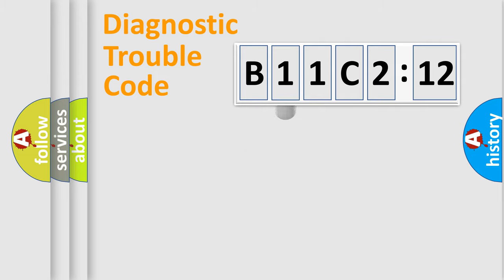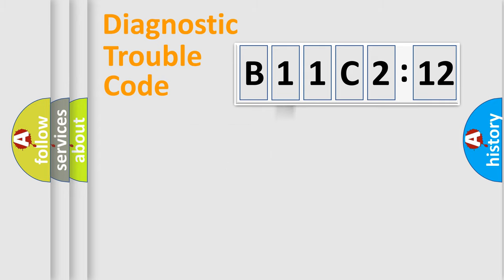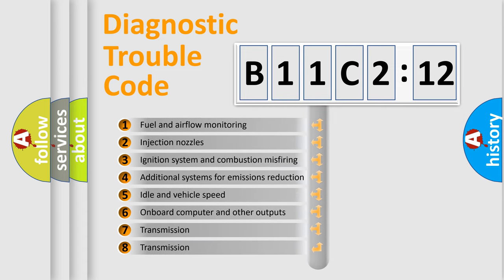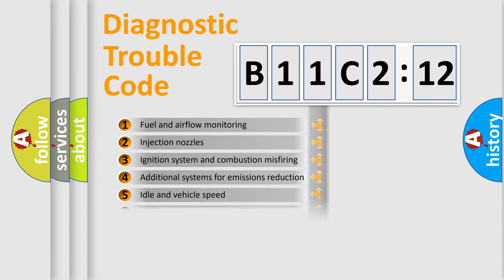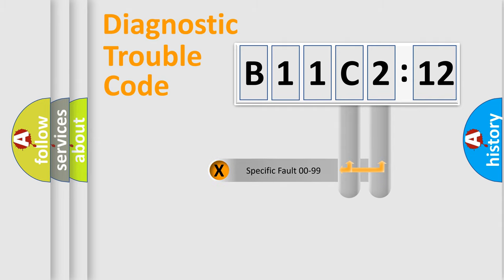The third character specifies a subset of errors. The distribution shown is valid only for the standardized DTC code. Only the last two characters define the specific fault of the group. The add-on to the error code serves to specify the status in more detail — for example, a short to ground. Note that such a division is valid only if the second character code is expressed by the number zero.